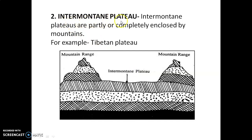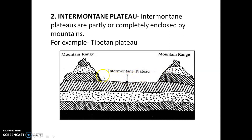Second type: Intermontane Plateau. An intermontane plateau means a plateau which is surrounded by mountains from all sides. For example, the Tibetan Plateau, which is surrounded by the Himalayas and Kunlun Mountains from all sides. In this image you will observe this intermontane plateau is located between two mountain ranges — one on the west side and another on the east side. In simple terms, a plateau surrounded by mountains is known as an intermontane plateau.